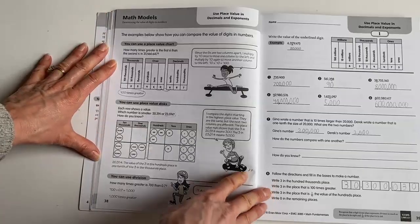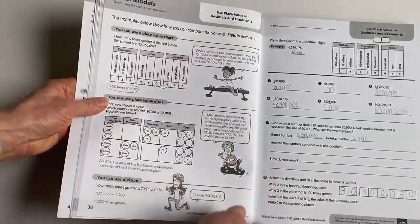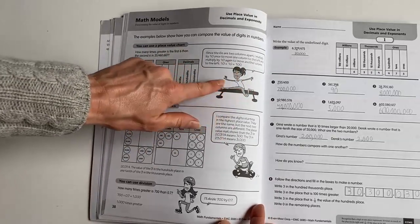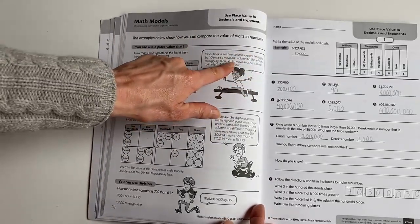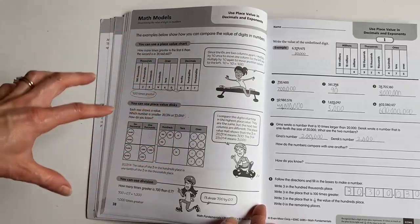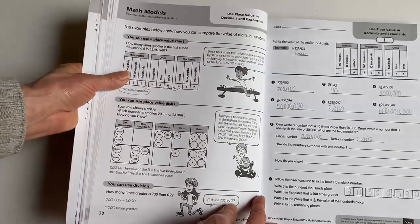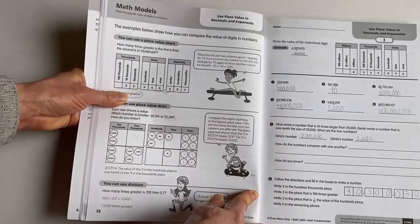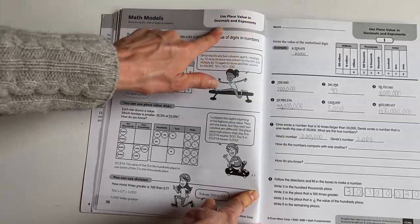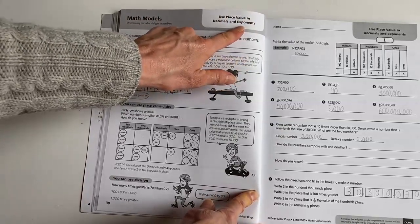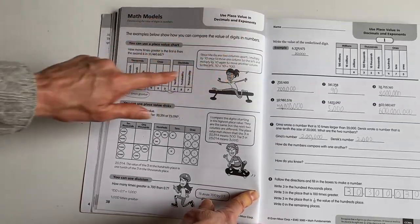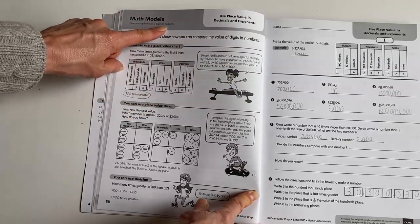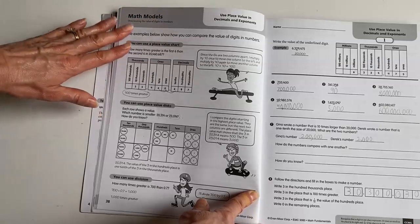So here is a math models page. And this is written in a child's language. I love that they have these characters where they actually are speaking and explaining it in a way that kids speak, but they're using the academic vocabulary so that they're actually explaining it using those proper terms, but in a way that kids understand. So here's the main focus of what they're doing. We're using place values in decimals and exponents. And for the teacher, they're saying we're also going to determine the value of the digits in numbers. And so here we go.